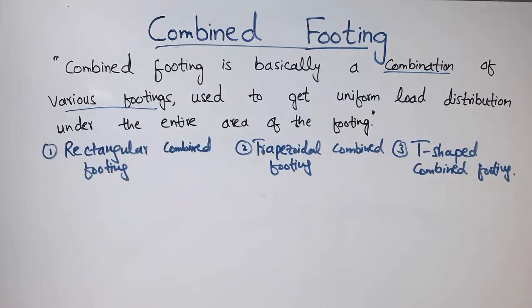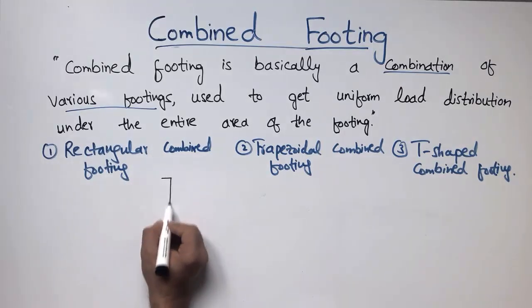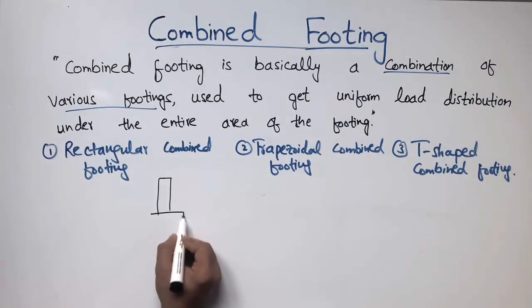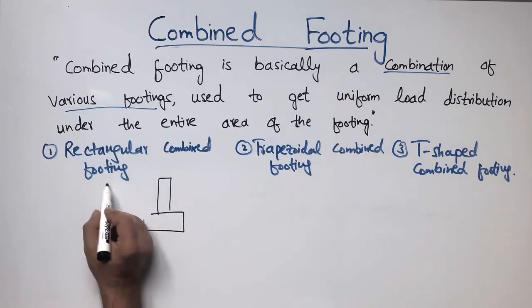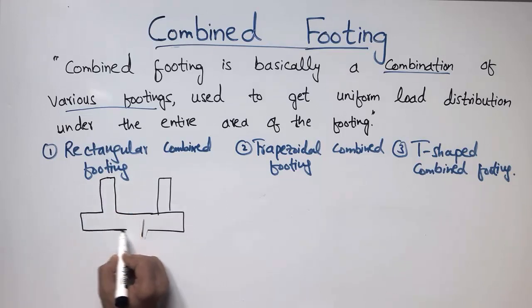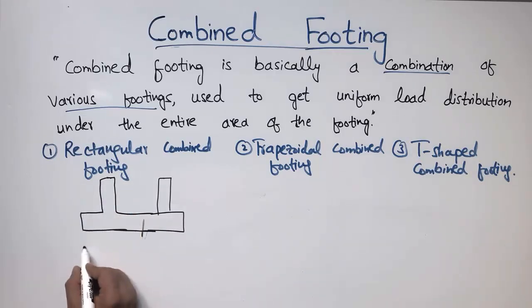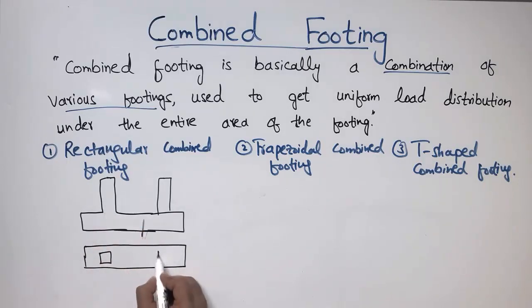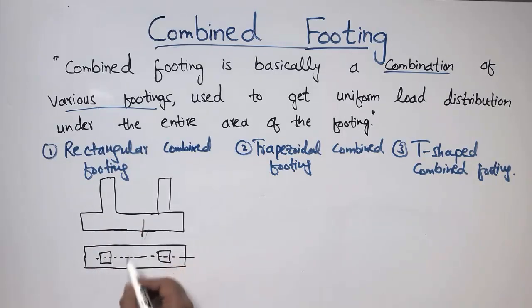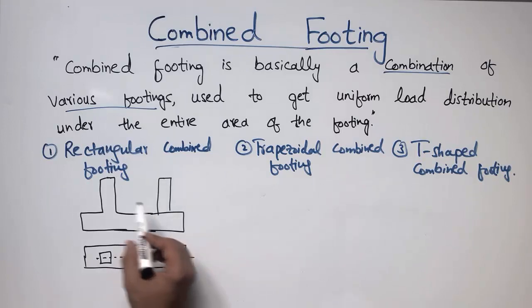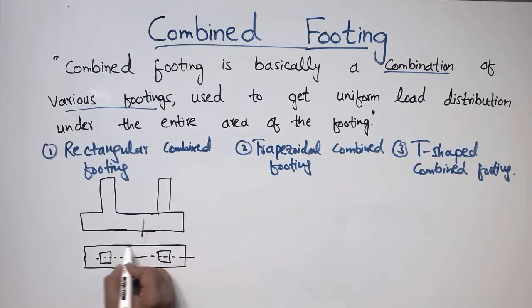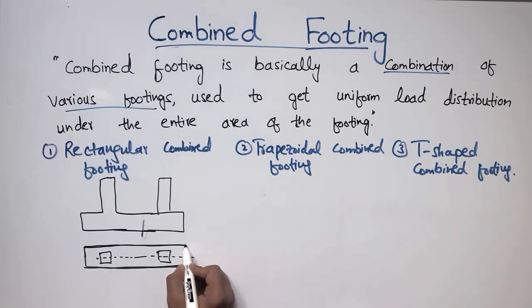For the rectangular combined footing, in elevation view it appears as a standard footing profile, and in plan view it looks rectangular. There is one column here and another column, and together their footing forms a rectangle. Because the combined footing has a rectangular shape on the outside, it is called the rectangular combined footing.